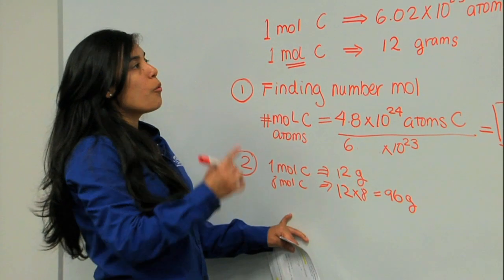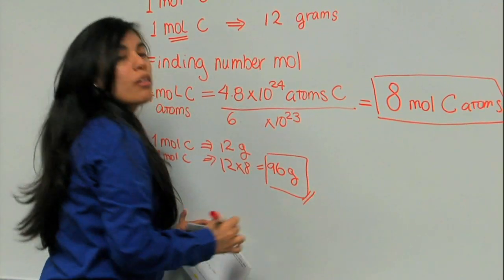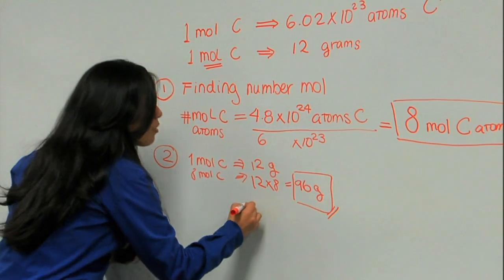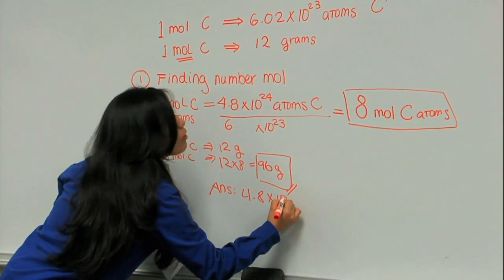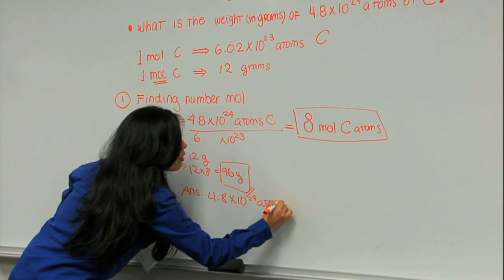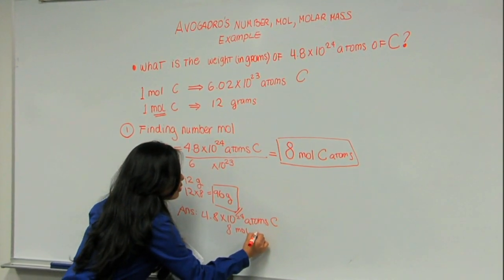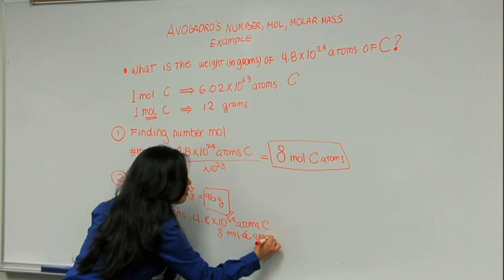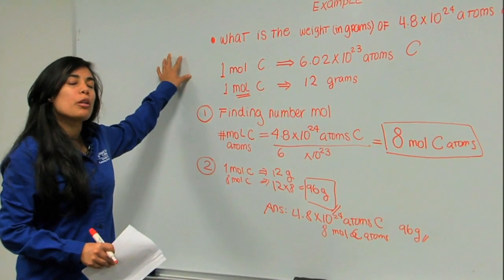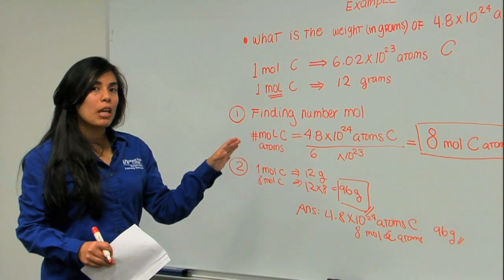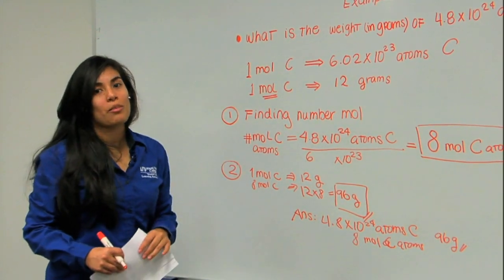So the weight of that number of atoms is going to be 96 grams. The answer is: 4.8 times 10 to the 24 atoms of carbon, which is the same as saying 8 moles of carbon atoms, weighs 96 grams. If you take this as an example and practice over and over again, you will be able to resolve any problem that involves Avogadro's number, mole, molar mass, and grams. Stay tuned.